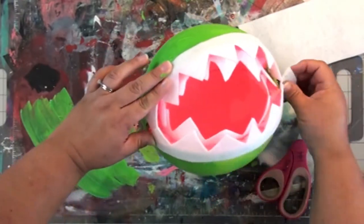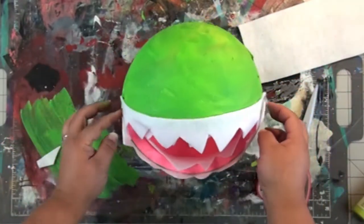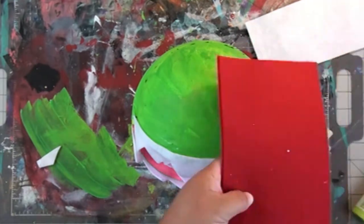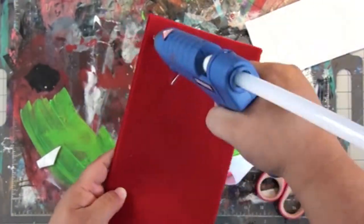Again, just a bead of hot glue is going to hold that on, and I'm also going to make lips so that's going to help hold this on too and to disguise it.